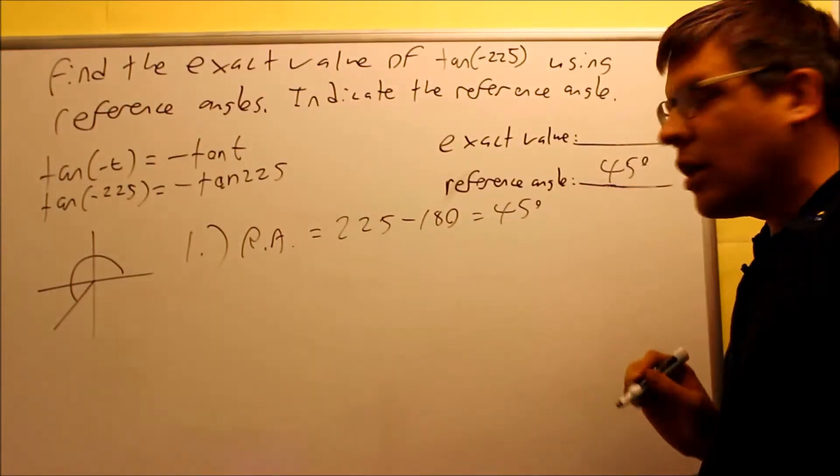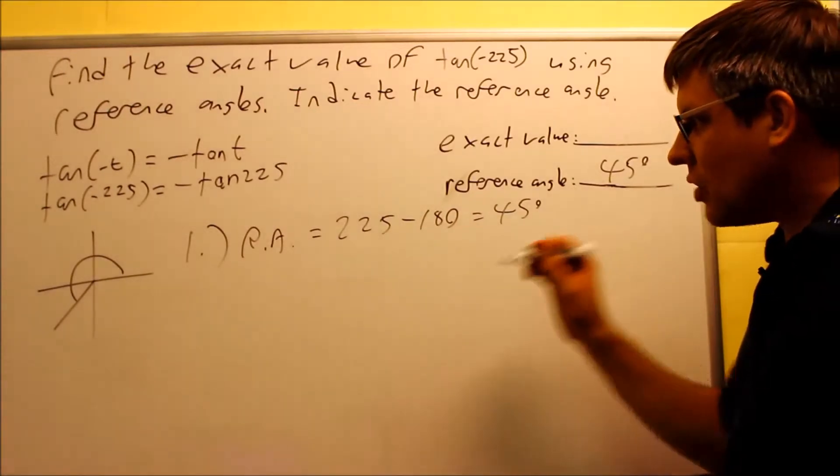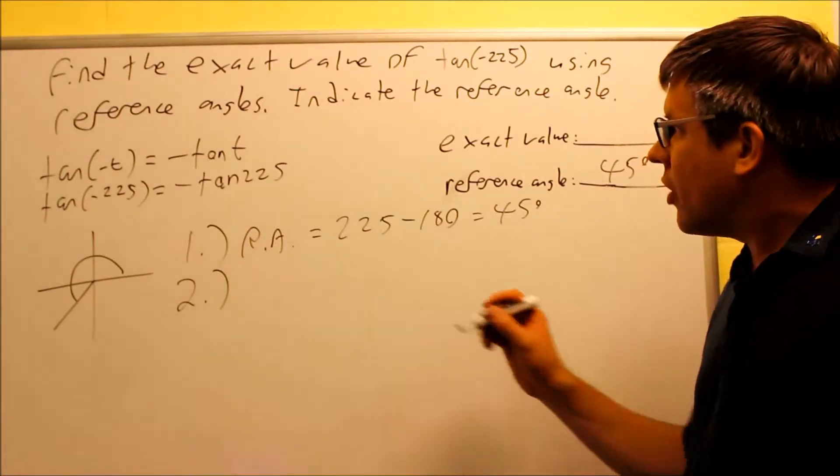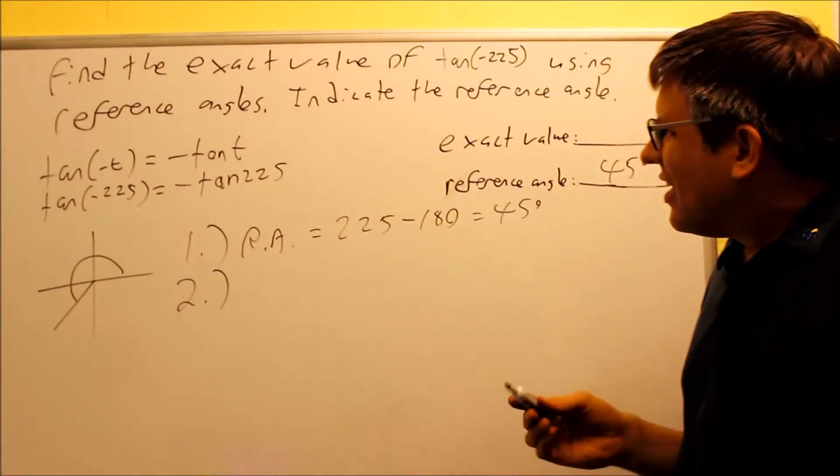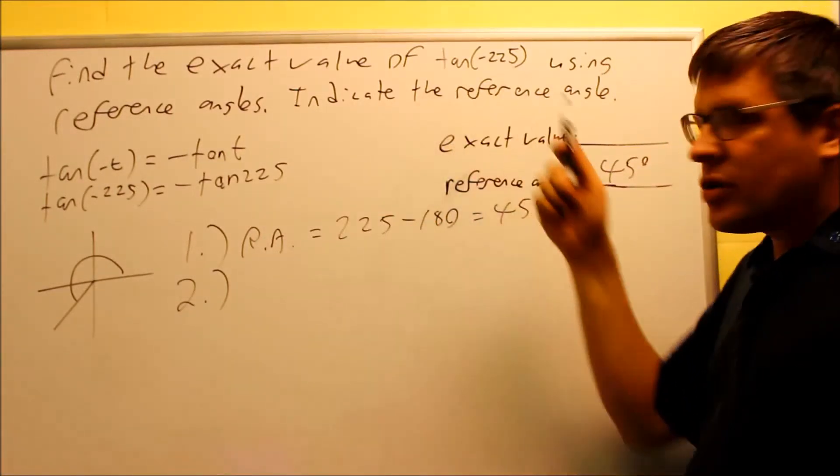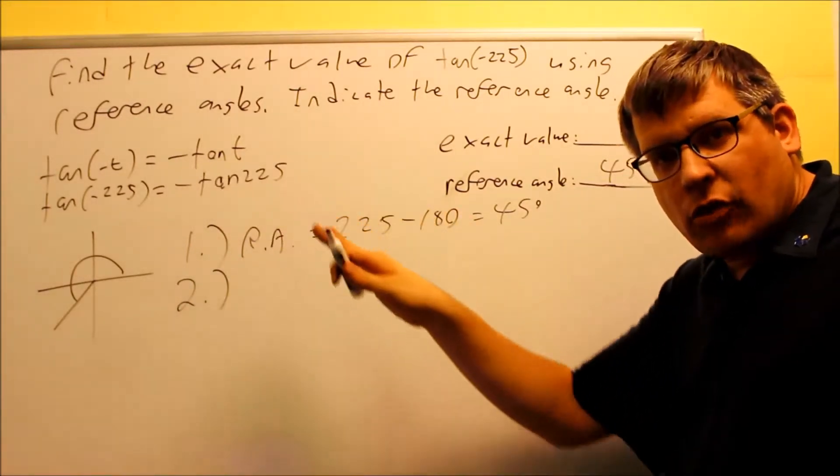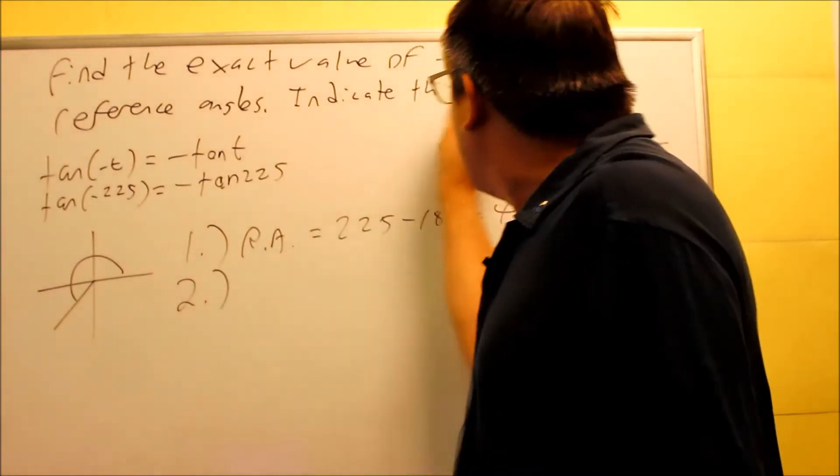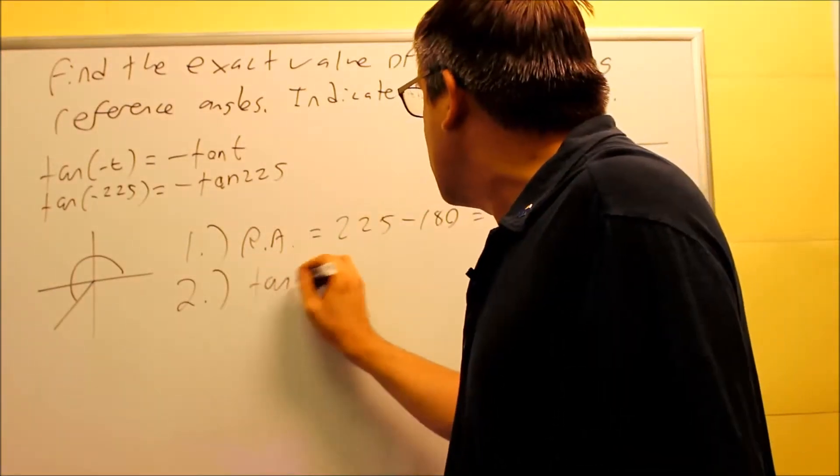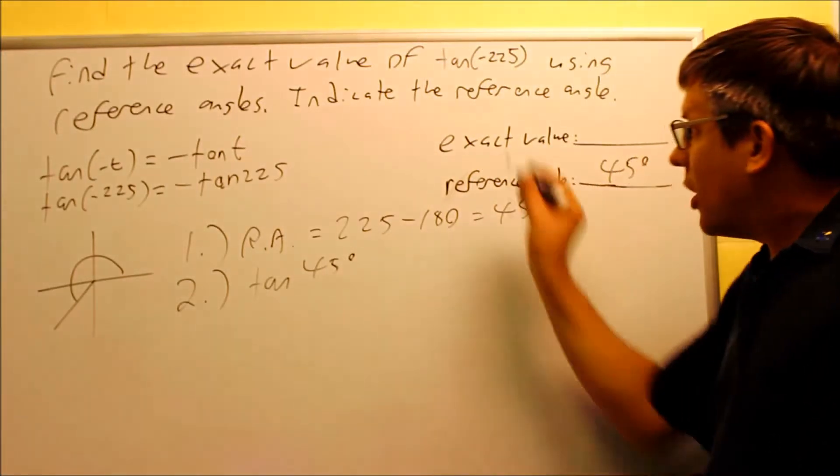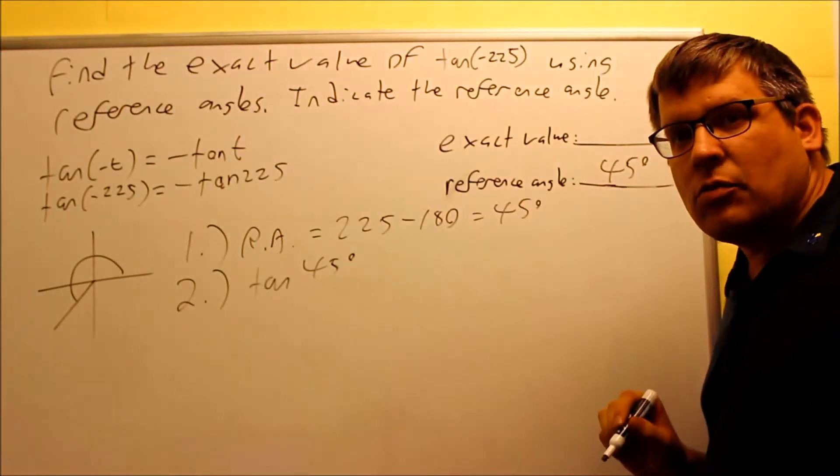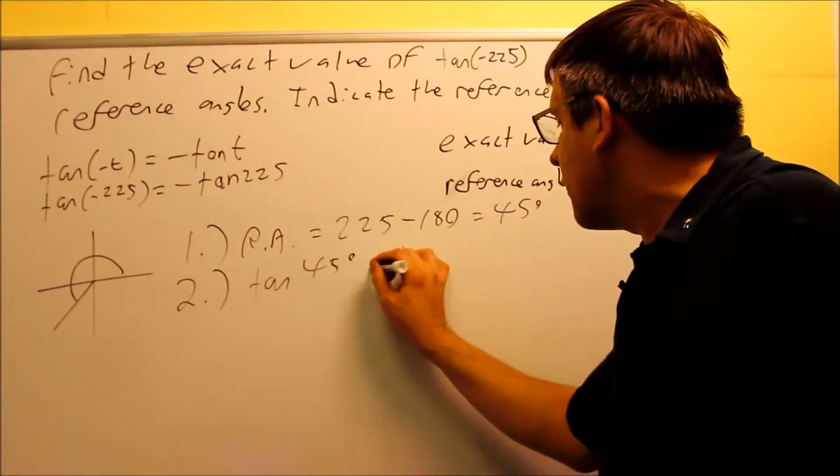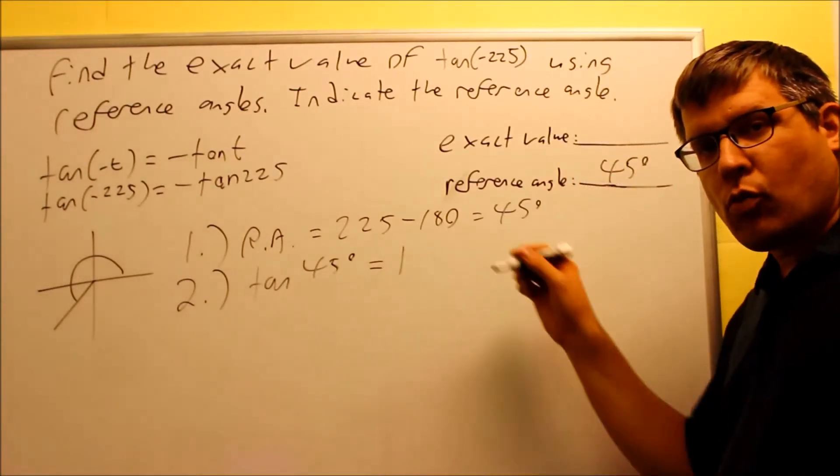Step two: I need to apply the trig function to the reference angle. The trig function in this problem is tangent. I'm not going to deal with the negative right now. I'll just deal only with the original one: tan(45 degrees). Tan(45) equals one if I look at my table of trig values or my unit circle.